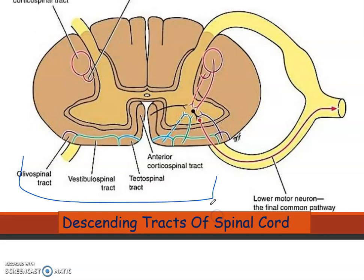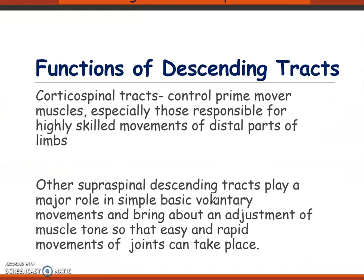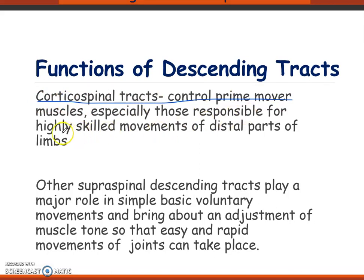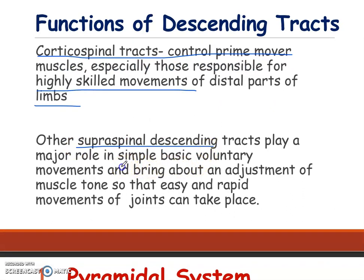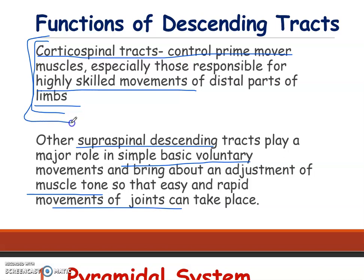Regarding the functions of the descending tracts: the corticospinal tracts control prime mover muscles, which are responsible for highly skilled movements of the distal parts of the limbs. Other supraspinal tracts play a major role in simple basic voluntary movements, bringing about adjustment of muscular tone. So the corticospinal tracts are responsible for motor skills, while the other spinal tracts handle simpler functions.